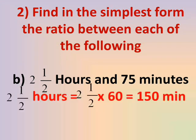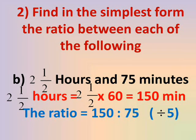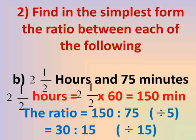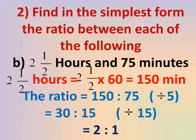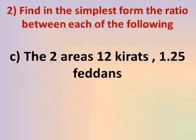2 and a half hours × 60 = 150 minutes, since 1 hour = 60 minutes. The ratio is now 150 minutes to 75 minutes, so 150 to 75. Both are divisible by 5: 150 ÷ 5 = 30 and 75 ÷ 5 = 15. Then both 30 and 15 are divisible by 15: 30 ÷ 15 = 2 and 15 ÷ 15 = 1.